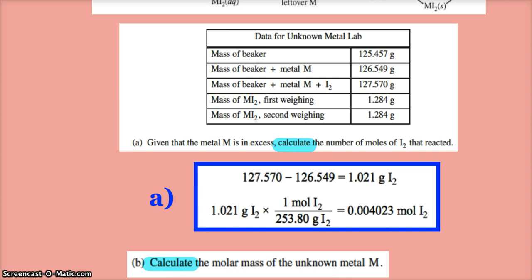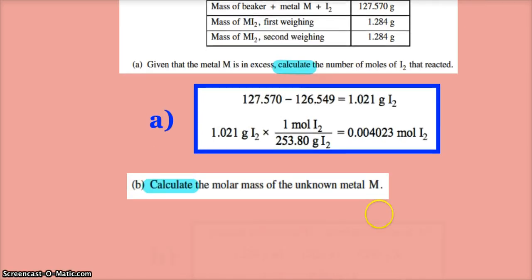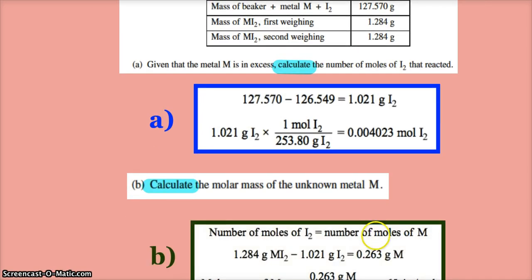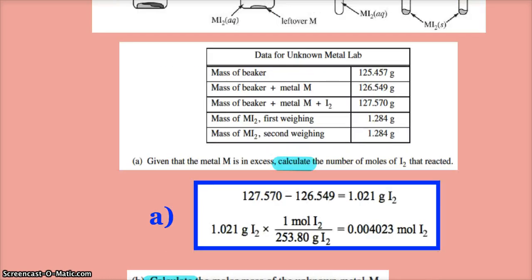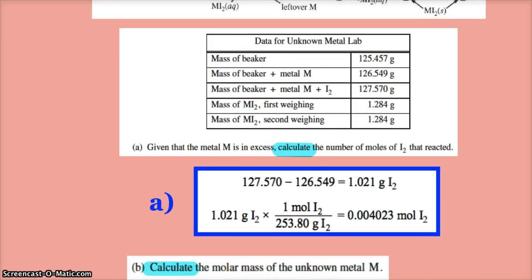Now they want us to calculate the molar mass of the metal, grams per mole. So I'm gonna need my grams of metal, so that would be my 126.549 minus my 125.457, and that'll give me my grams.